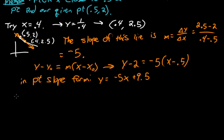Let's say we want to try a different number. We'll try x equals 0.6. So if we plug in 0.6 to our equation, the one where it was y equals 1 over x, we get the point 0.6 comma 1.6 repeating. And then we have our given point, which is 0.5 comma 2.